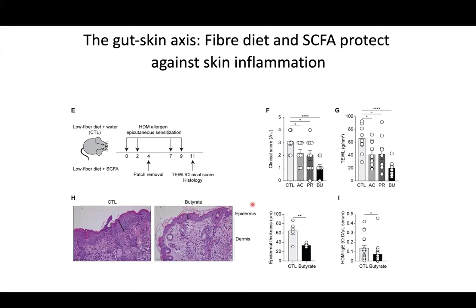We continued to focus on butyrate for this project. You can see the inflammation and thickening of the epidermis in the disease context. If the mice were given butyrate in their drinking water over that period, the disease was ameliorated — quantified here with epidermal thickness. Even IgE in the circulation was also reduced. So short-chain fatty acids in the gut are somehow influencing inflammation in the skin.